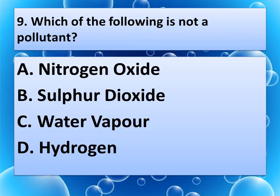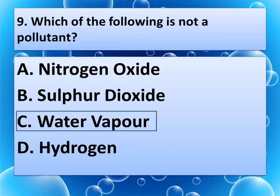Now next question is, which of the following is not a pollutant? Options are A. Nitrogen oxide, B. Sulphur dioxide, C. Water vapour, D. Hydrogen. Think about the correct answer. Correct answer is water vapour.